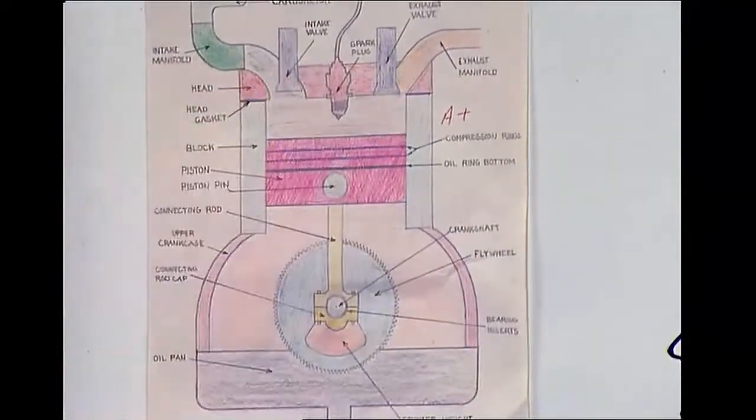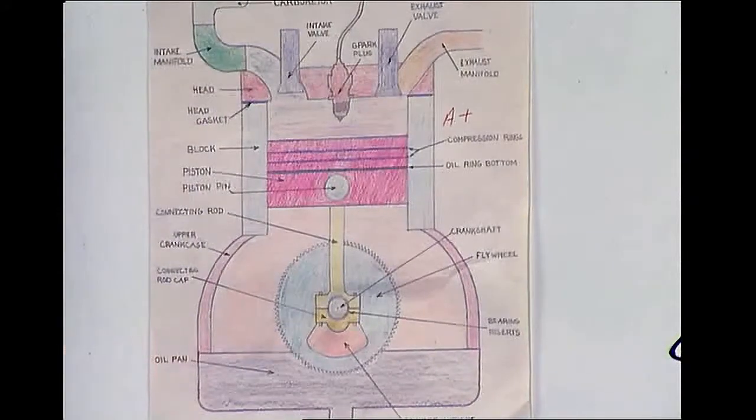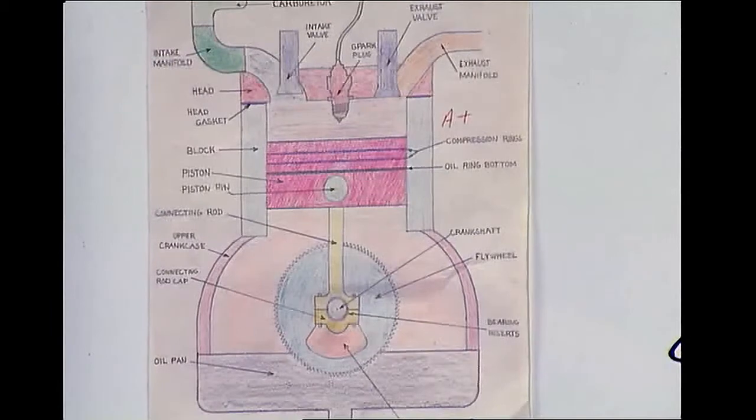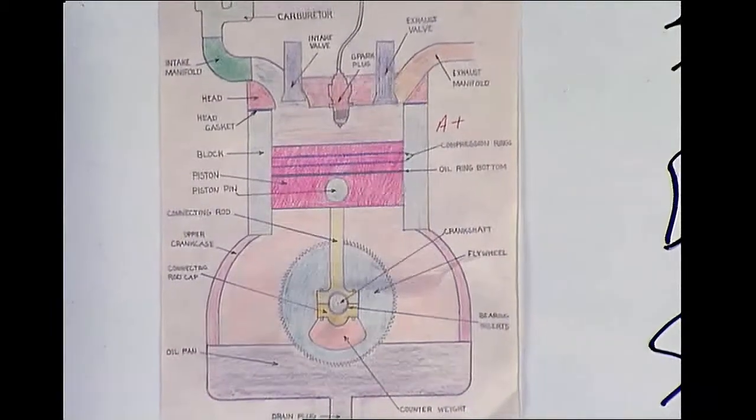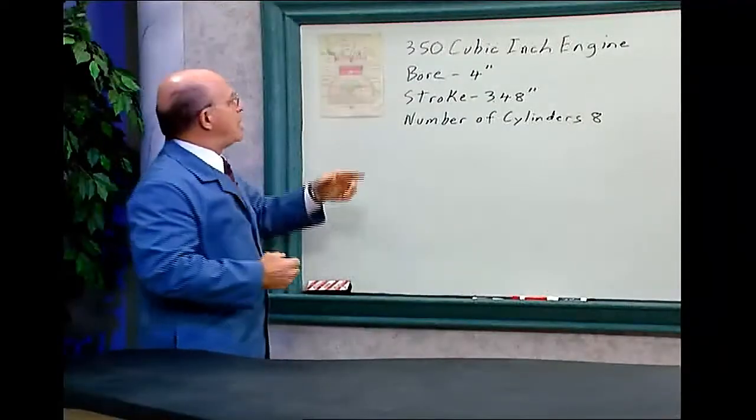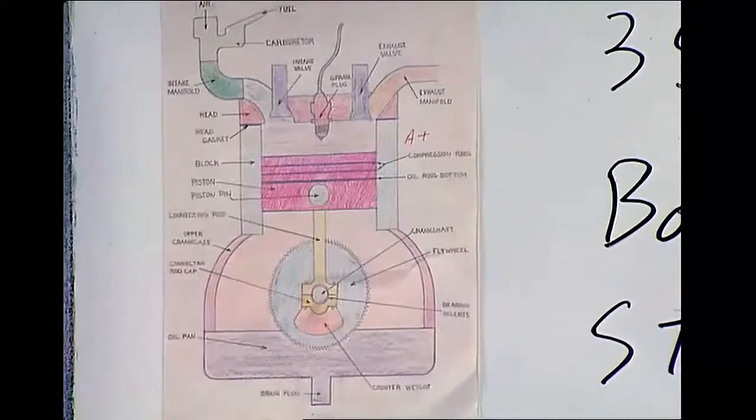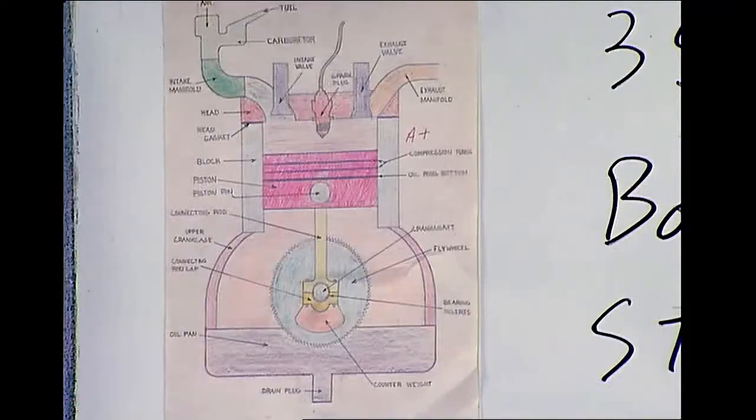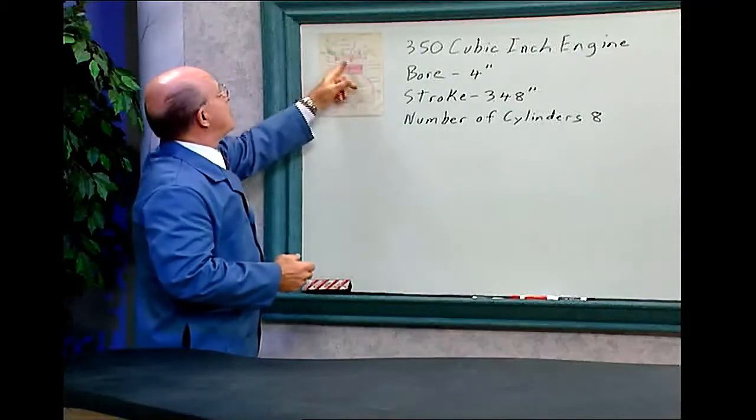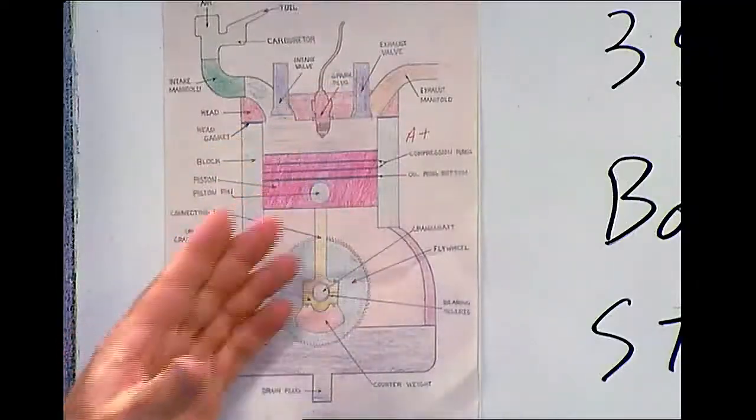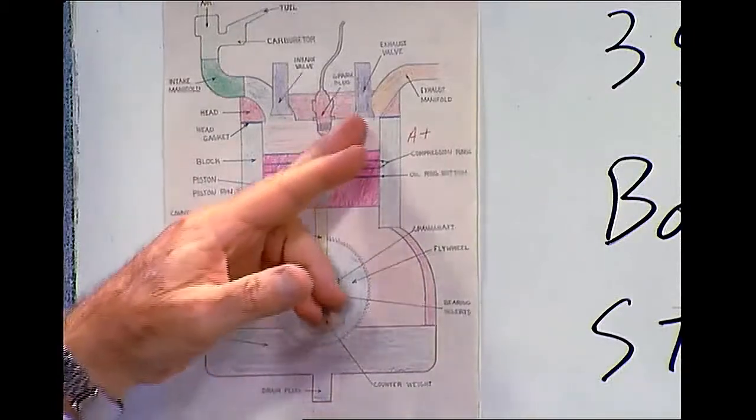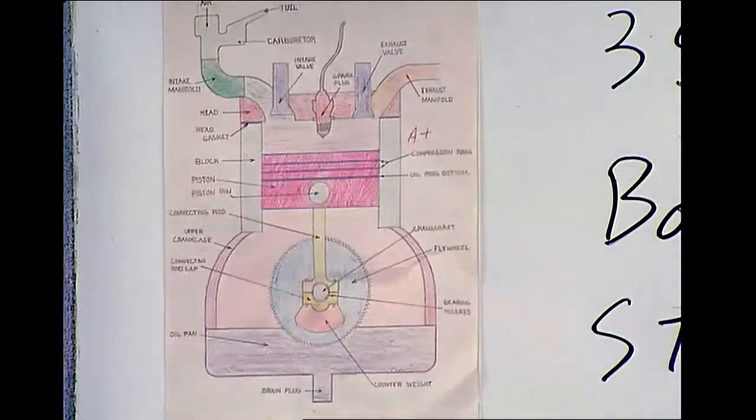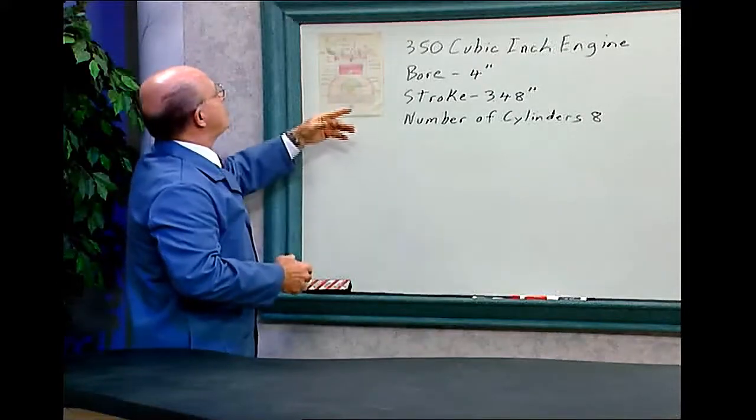Then the valve closes and you have a compression stroke. Electricity goes to the spark plug, ignites this fuel mixture and there's an internal explosion. The hot gas inside forces the piston down - that's where the engine gets the power. That's the power stroke. Then the exhaust valve opens up, pushes out the exhaust gases through the exhaust manifold and out through the tailpipe. Then it starts over again.